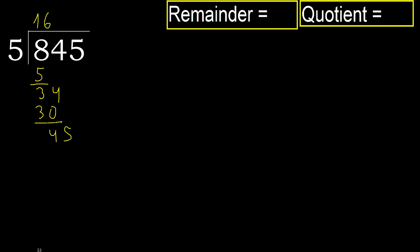Bring down to get 45. 5 multiplied by 9 is 45, which is not greater. Subtract: 0.